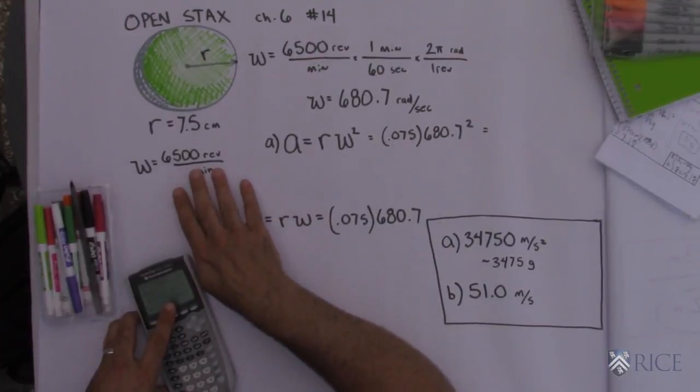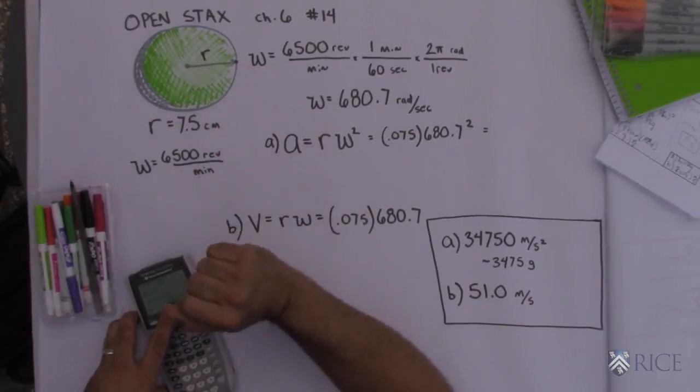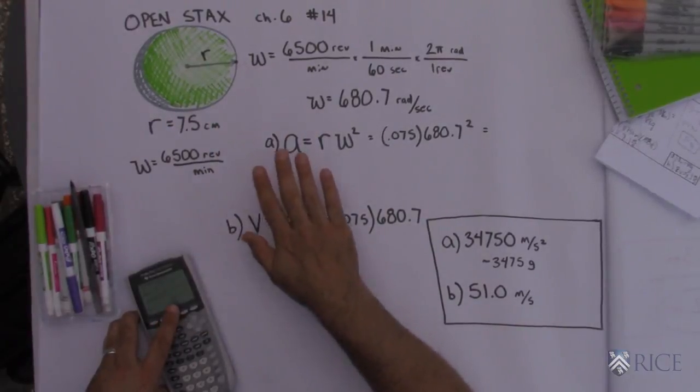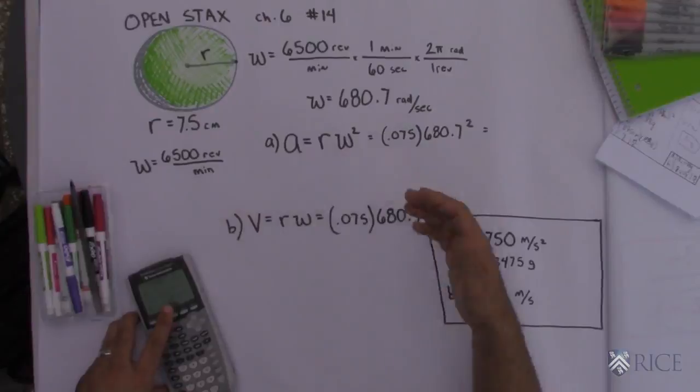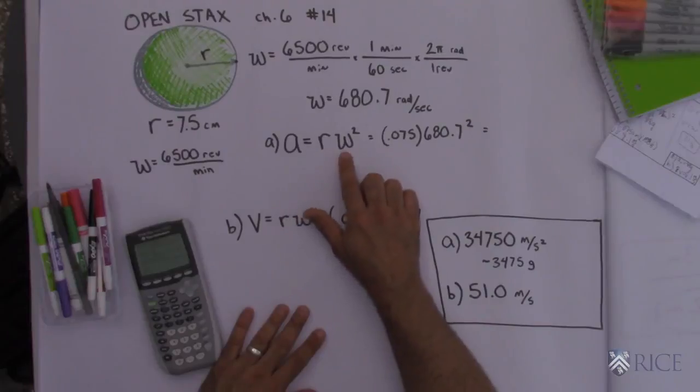But they gave us how fast it's spinning in revolutions per minute and I like to work everything in radians per second. So the first thing I did, they wanted us to get the centripetal acceleration. There's a couple different formulas. You might find other ways to do it but as long as you get the same answer we're all set. The formula I use for centripetal acceleration was r omega squared.